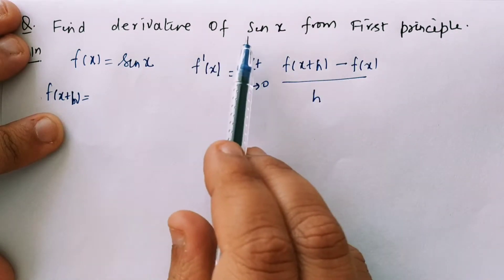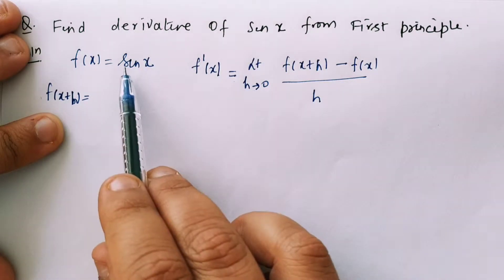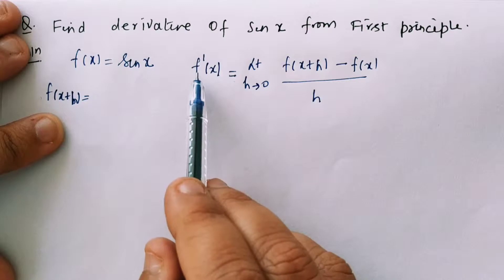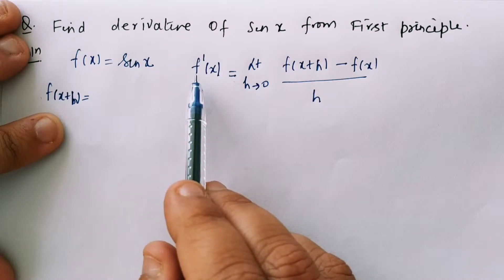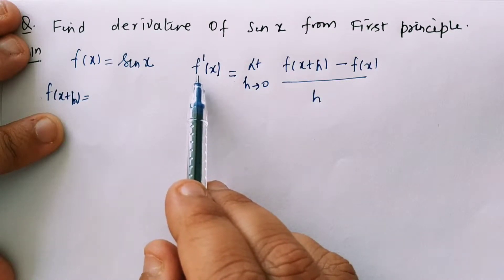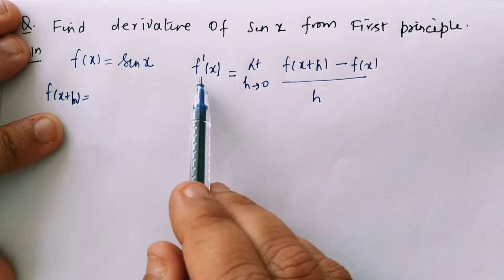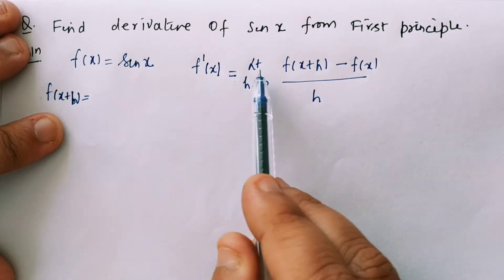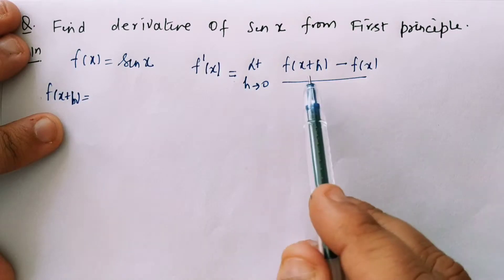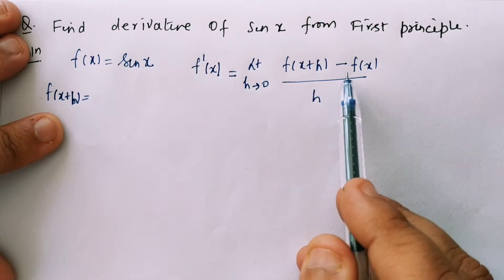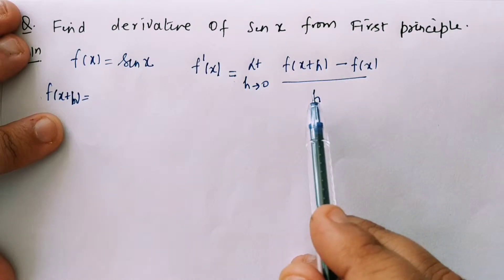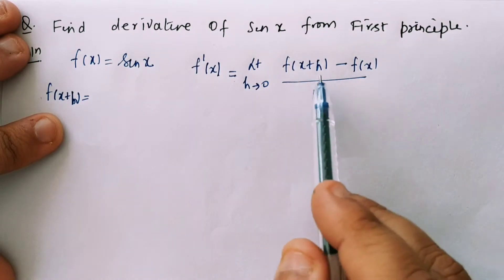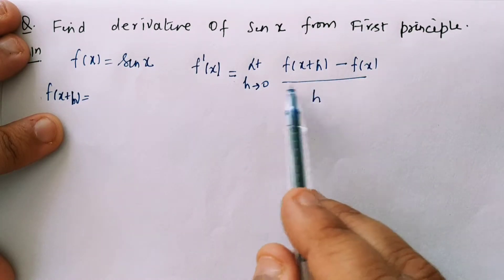So my function f(x) is given as sin x. The formula for the first principle for differentiation — the derivative of f(x) — is: f'(x) = limit h tends to 0 of f(x+h) minus f(x) divided by h. Now we have to substitute all these values and simplify them.